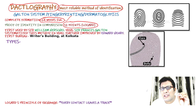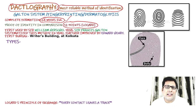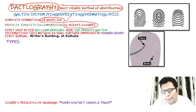The first fingerprint bureau was started in the Reuters building at Kolkata. There are four types of fingerprints: loop, whorl, arch, and composite. The most common one is loop, and the least common one is composite, also known as mixed.